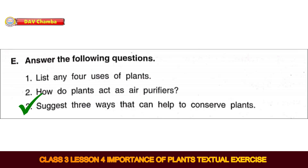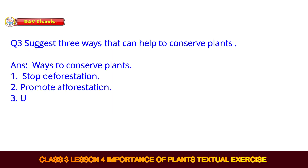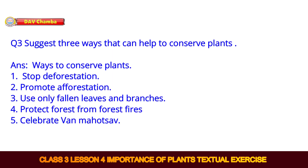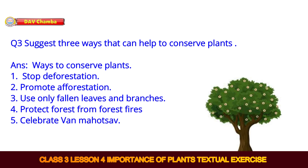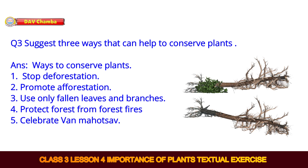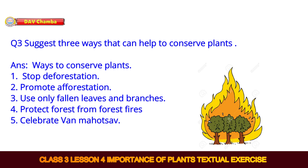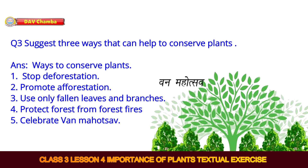Question 3: Suggest 3 ways that can help to conserve plants. There are different ways to conserve plants: 1. Stop deforestation. 2. Promote afforestation. 3. Use only fallen leaves and branches. 4. Protect forests from forest fires. 5. Celebrate Van Mahotsav.